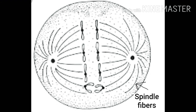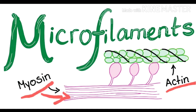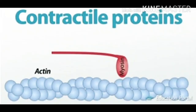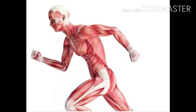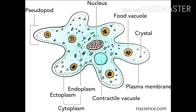These microfilaments are made up of actin protein. When these actin proteins present in microfilaments are in association with another type of protein called myosin, they form a contractile machinery of the cell. This contractile machinery helps in the contraction and relaxation of the cell. In higher eukaryotes, this contractile machinery is present in muscle cells, which can contract and relax.